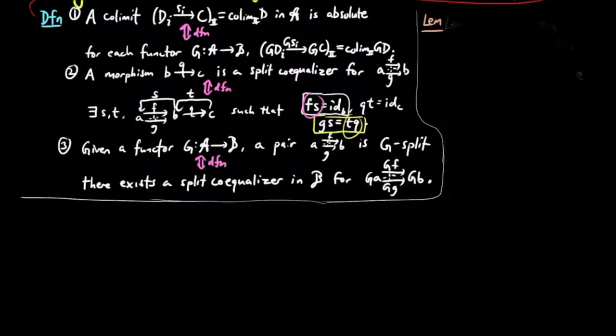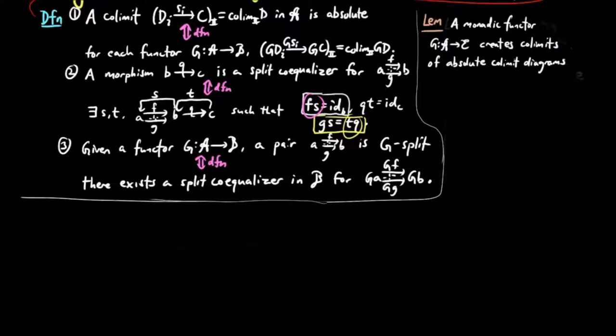We start with the following lemma. A monadic functor G creates colimits of absolute colimit diagrams in E, which means if a diagram in A is taken by G to a diagram which has an absolute colimit, then there is a unique lifting of this colimit to A. However, this colimit in A does not need to be absolute.